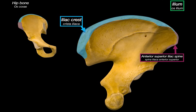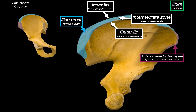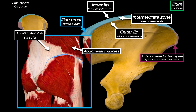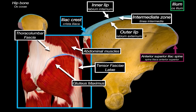Rotating to the posterior aspect of the iliac crest, it is divided into three zones: the outer lip, the intermediate zone, and the inner lip. Different muscle groups attach to different parts of this crest. The external oblique inserts at the outer lip, the internal oblique anchors to the intermediate zone, and the transversus abdominis — the deepest of the three — originates from the inner lip. The thoracolumbar fascia attaches medially, blending with the inner lip. Gluteus maximus attaches to the outer lip, while gluteus medius sits near the crest on the gluteal surface. The tensor fasciae latae continues along the anterior part of the iliac crest, blending into the iliotibial tract.